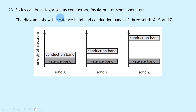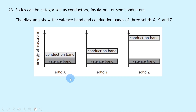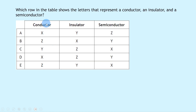Question 23 shows energy band diagrams for solids X, Y and Z. Solid X has overlapping conduction and valence bands (no band gap) — a conductor. Solid Y has a small band gap — a semiconductor. Solid Z has a large band gap — an insulator. So conductor = X, insulator = Z, semiconductor = Y, giving option D.